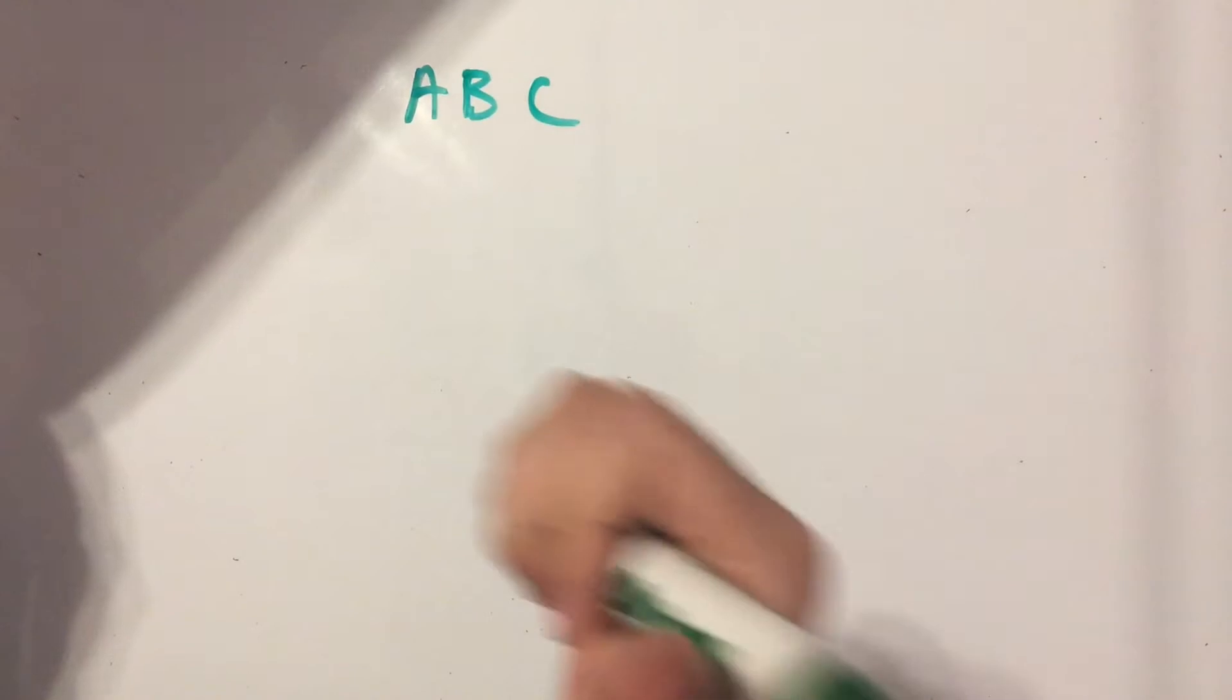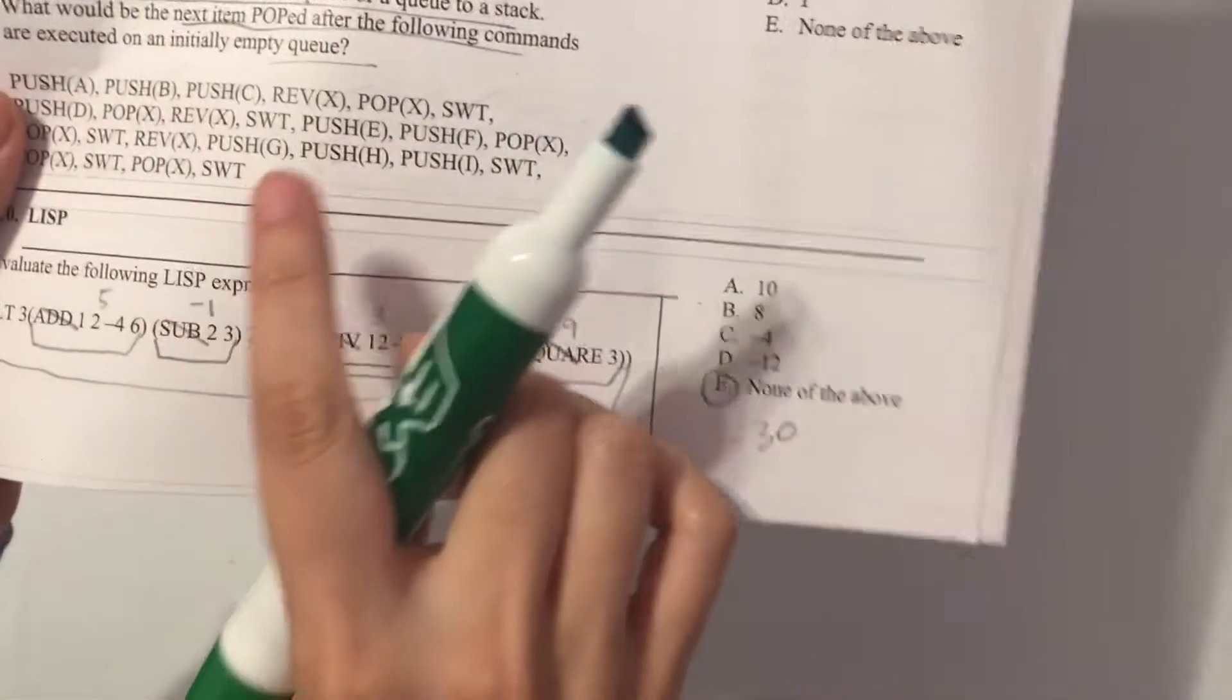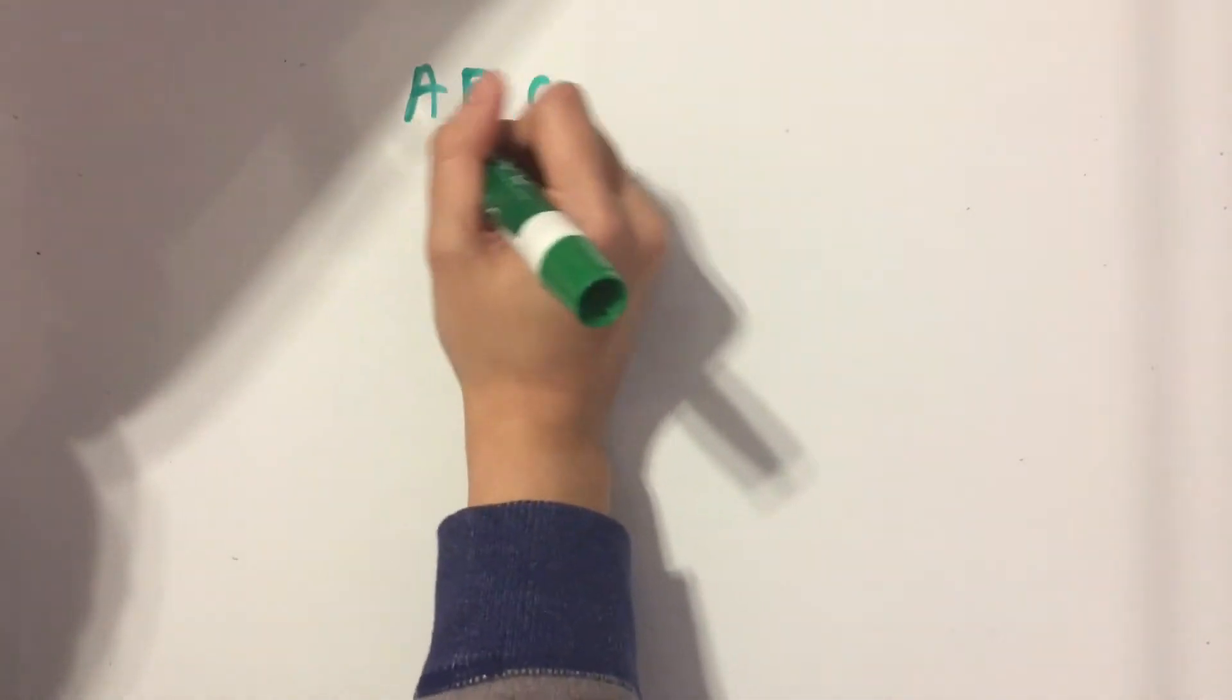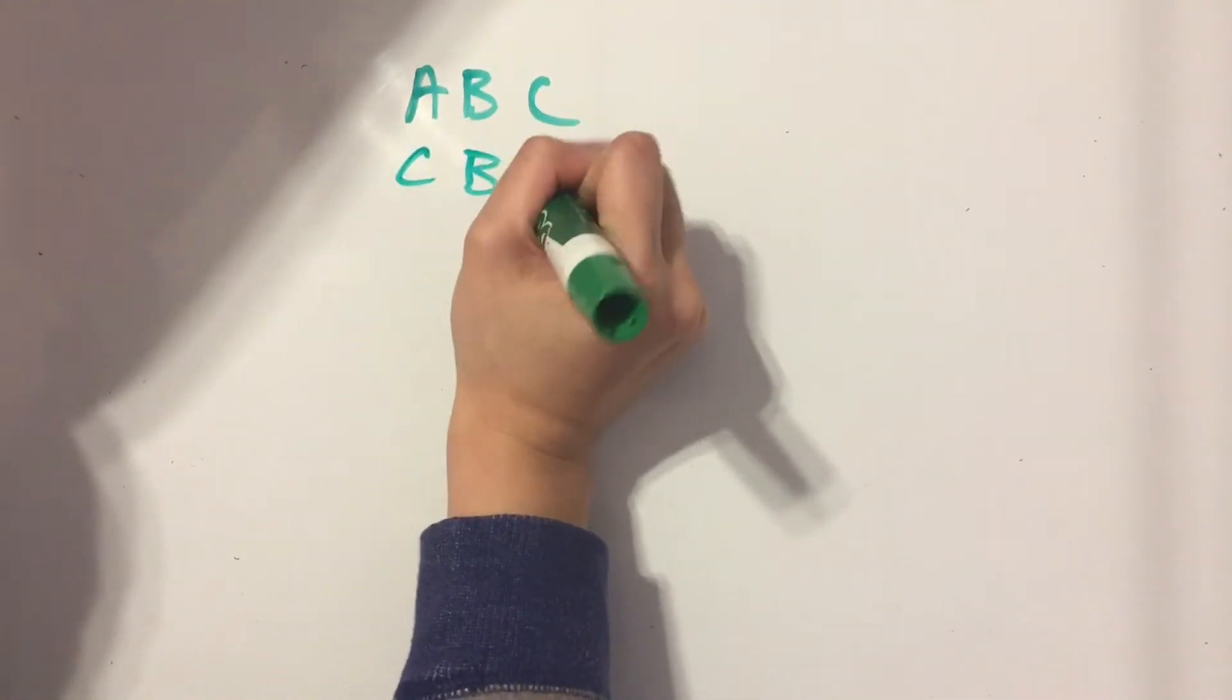Okay, first three commands, good to go. Now we have to reverse our whole queue. So instead of A, B, C, we'll have C, B, A.